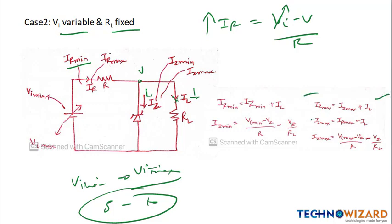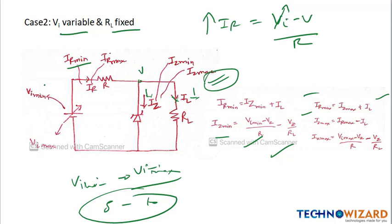So we can write: IR minimum = Iz minimum + IL, and IR max = Iz max + IL. Iz minimum = (Vi minimum − Vz) / R, and IL = Vz / RL. Similarly we can write for Iz max. These are the current equations for the zener diode as a voltage regulator in Case 2. Now we will do two questions based on Case 1 and Case 2.